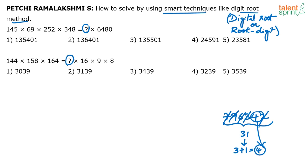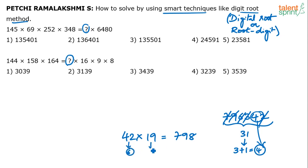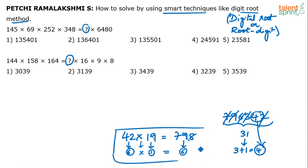Now, how is this concept of root digit useful? Take a simple example: 42 into 19. 42 into 19 is 840 minus 42, which is 798. The concept of root digit tells us the root digit will be balanced on both sides. Root digit of 42 is 4 plus 2 equals 6. Root digit of 19: 9 is excluded, so it's 1. Root digit of 798: 9 is excluded, 7 plus 8 is 15, and 1 plus 5 is 6. So 6 into 1 equals 6. It balances — root digit is always the same on both sides.